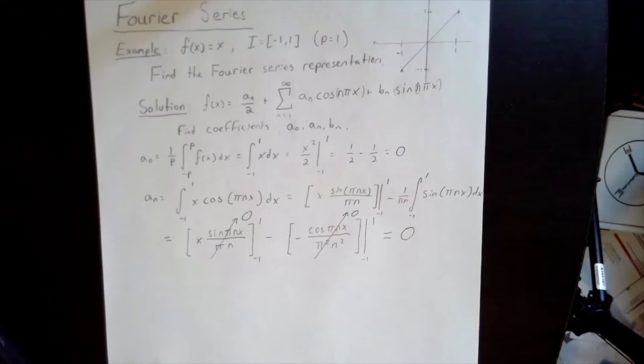The results of our integration by parts give us two terms, both of which are equal to 0. We therefore conclude that the coefficients a_n are equal to 0 for all n. That means that the coefficients on all cosine terms in our Fourier series are equal to 0.